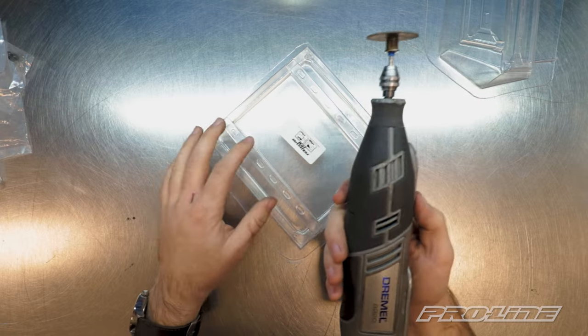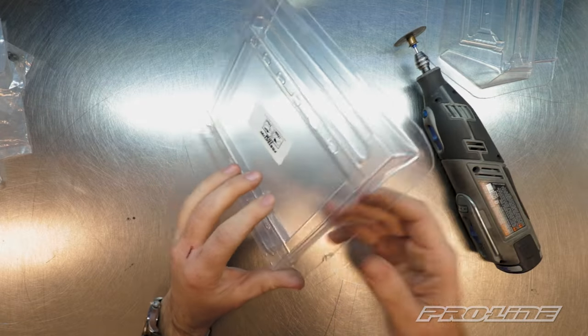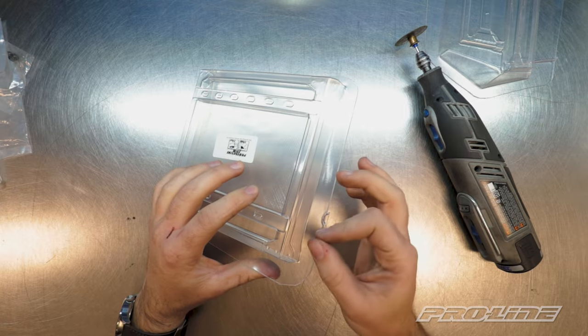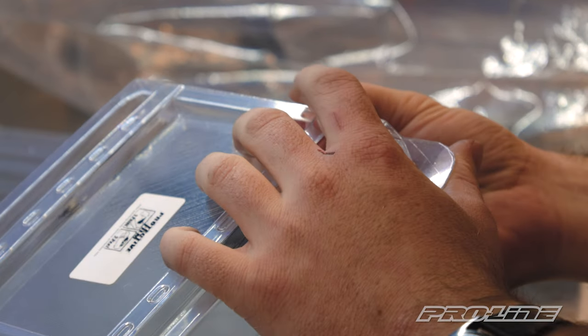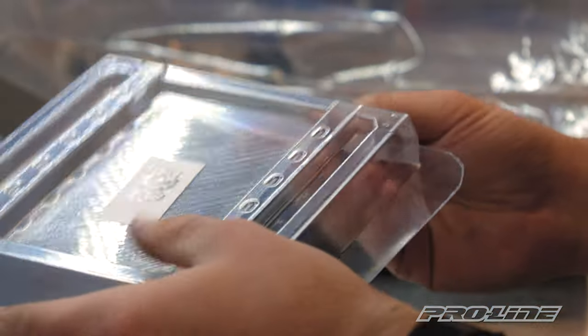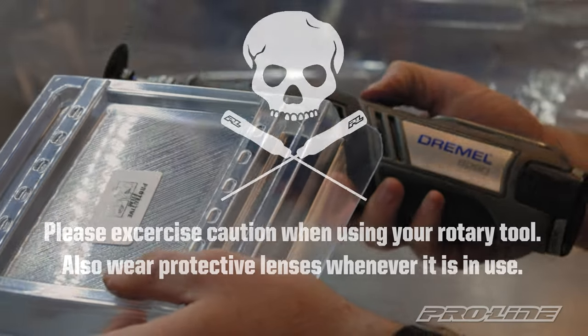We're going to be using the rotary tool. Now normally with other bodies you could take an X-Acto knife and drag it across and then break the edge, but since the material is a lot thicker, to save time we're going to be using a rotary tool.